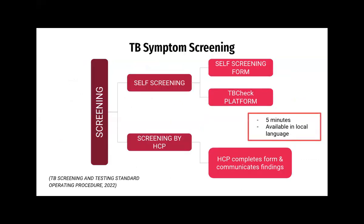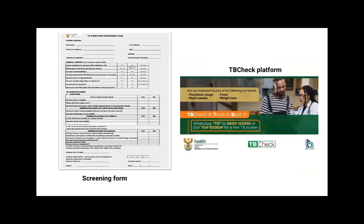Symptom screening can occur in two ways: self-screening using a self-screening form or the TB check platform, which is an online service, or with a healthcare practitioner asking questions and communicating results. These screening tests should take five minutes or less and be available in the patient's local language. The white form on the left is the screening form, and the TB check platform shown in green allows you to simply WhatsApp the word TB to a number and receive a free, data-free TB screen — you don't need data or airtime.